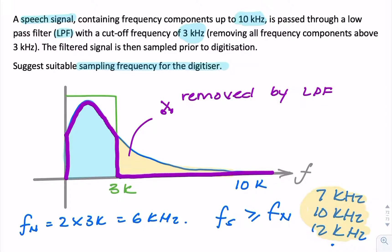It needs to be greater than or equal to the Nyquist rate of 6 kHz. So the low-pass filter has allowed us to use a much lower sample frequency than we would if we didn't have the low-pass filter.